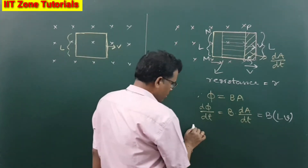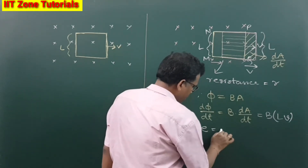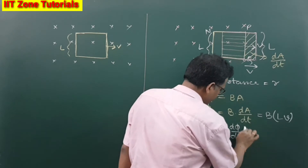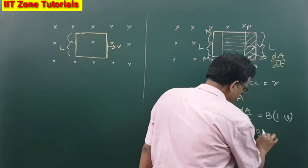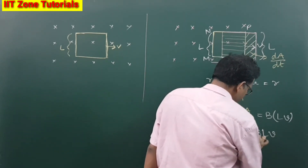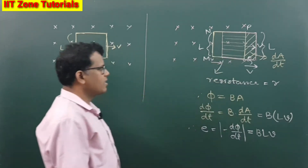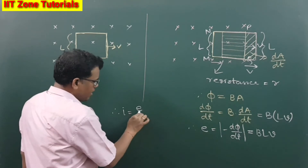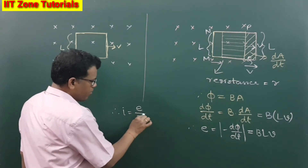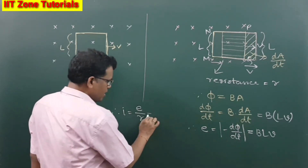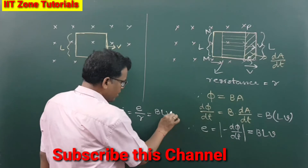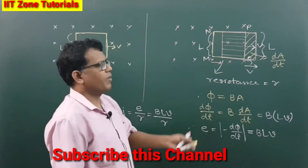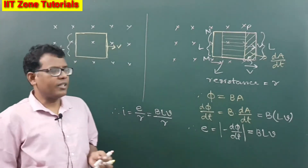Therefore the induced EMF is the magnitude of minus dΦ/dt, which equals BLV. The induced current equals induced EMF divided by resistance R, so the induced current is BLV/R. From here we can find the magnitude of the induced current.